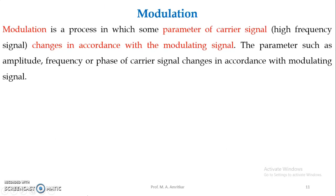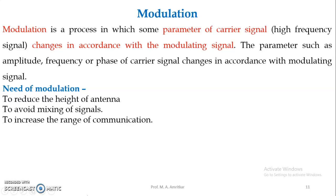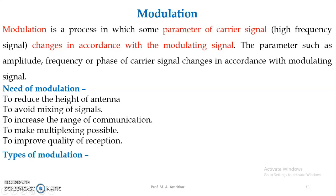Now, what is modulation? Modulation is a process in which some parameters of a carrier signal — such as amplitude, frequency, or phase — change in accordance with the modulating signal. Carrier signals have a high frequency compared to the modulating signal. The need for modulation includes: reducing the height of the antenna, avoiding mixing of signals, increasing the range of communication, making multiplexing possible, and improving quality of reception.